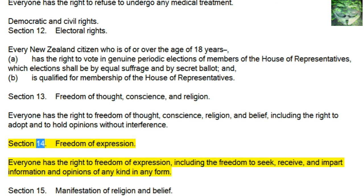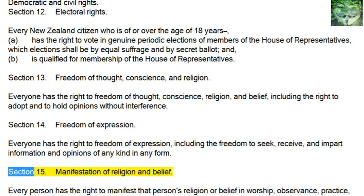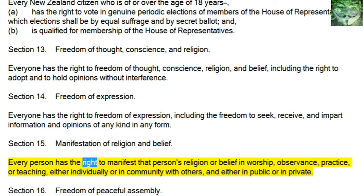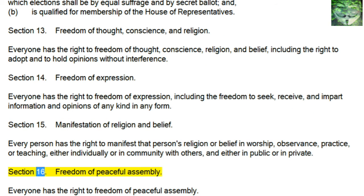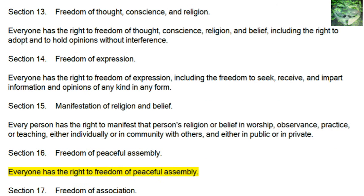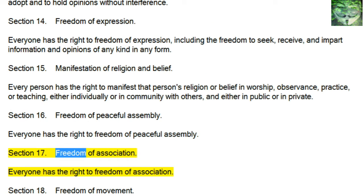Section 14, Freedom of Expression: everyone has the right to freedom of expression, including the freedom to seek, receive, and impart information and opinions of any kind in any form. Section 15, Manifestation of Religion and Belief: every person has the right to manifest that person's religion or belief in worship, observance, practice, or teaching, either individually or in community with others, and either in public or in private. Section 16, Freedom of Peaceful Assembly: everyone has the right to freedom of peaceful assembly. Section 17, Freedom of Association: everyone has the right to freedom of association.